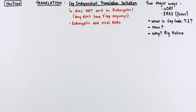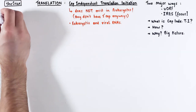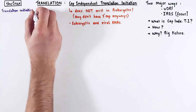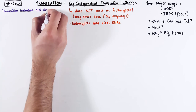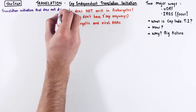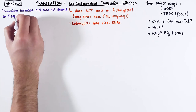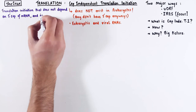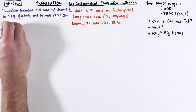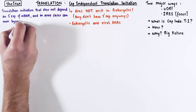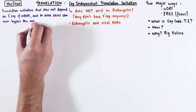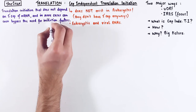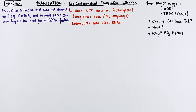CAP-independent translation initiation is the process of starting translation without depending on the 5' cap of the mRNA. And in some cases, it can even bypass the requirement for initiation factors that are needed in a typical translation initiation.